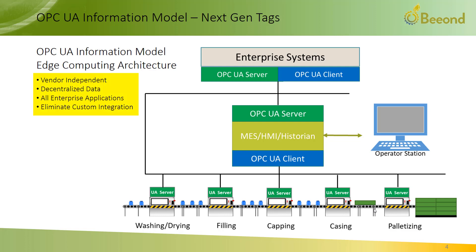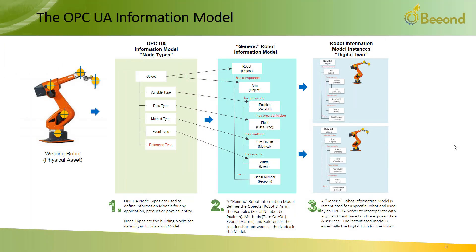Tag servers, which previously were centralized and held only plant floor data, are now distributed and enable interoperability and information exchange for all applications existing within the enterprise, from sensor to cloud. OPC UA supports a client-server architecture, but it's a distributed, decentralized one. In OPC UA, any physical entity, application, or system that has data is a server.